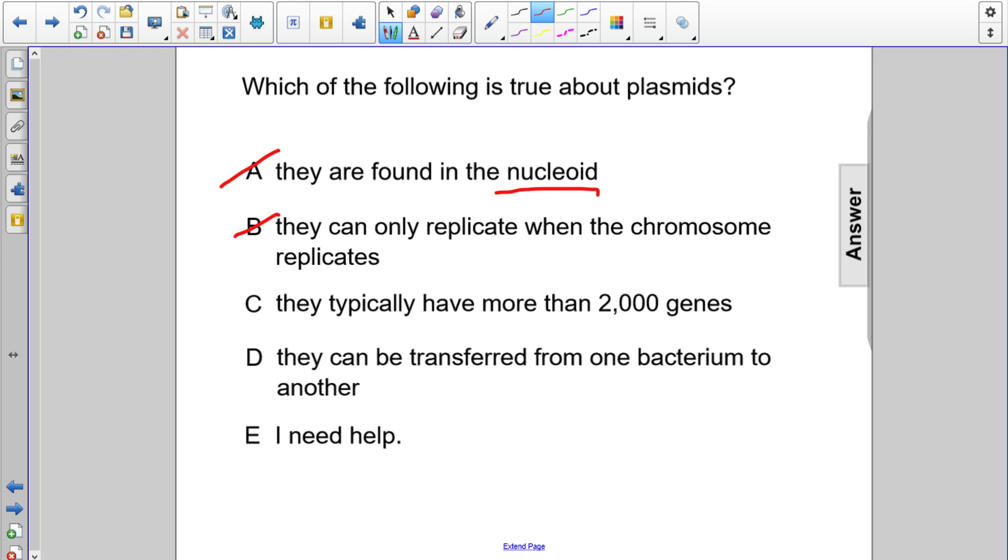Choice C says they typically can have more than 2,000 genes. This is not true because plasmids are generally smaller, not larger. So they are going to have less than 2,000 genes.